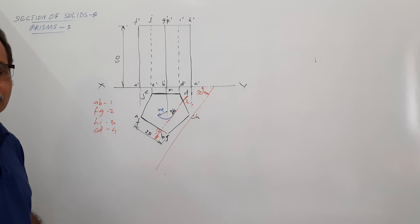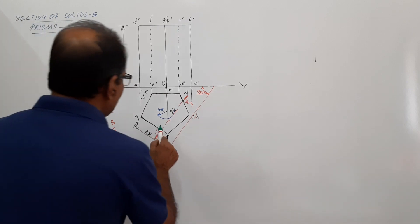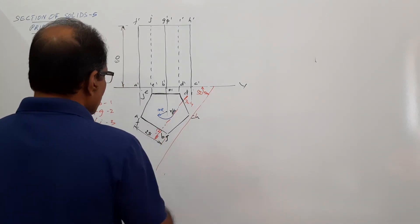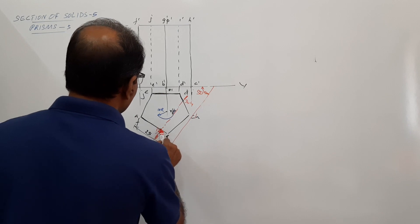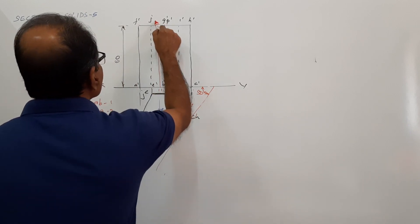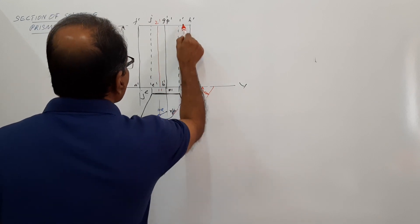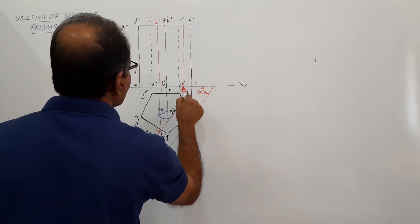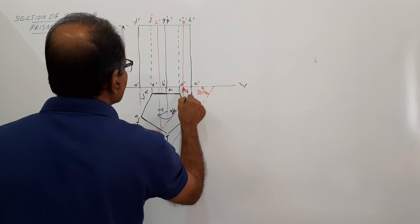Now you have to draw the sectional elevation. Project 1 up, you get 1 dash, 2 dash. Project 3, 4 up, you get 3 dash, 4 dash.